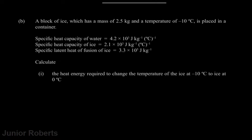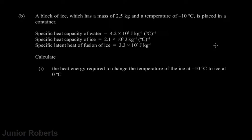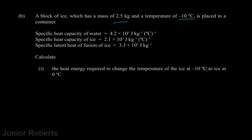Part B states that a block of ice with a mass of 2.5 kilograms and a temperature of minus 10 degrees is placed in a container. We're given the specific heat capacity of water as 4200 J/kg/°C, the specific heat capacity of ice as 2.1 × 10³ J/kg/°C, and the specific latent heat of fusion of ice. The question asks us to calculate the heat energy required to change the temperature of ice from minus 10°C to ice at 0°C.